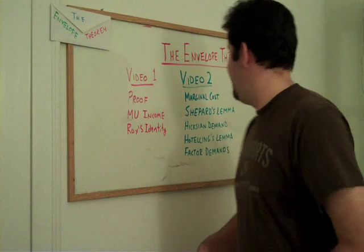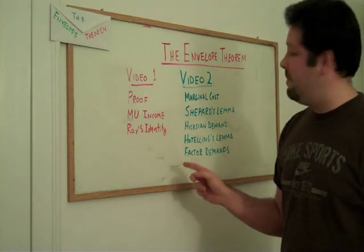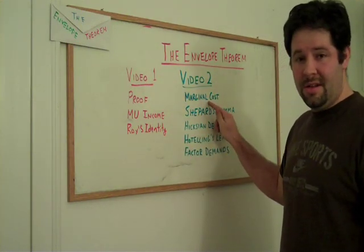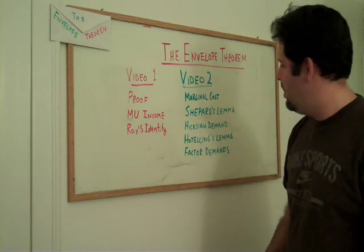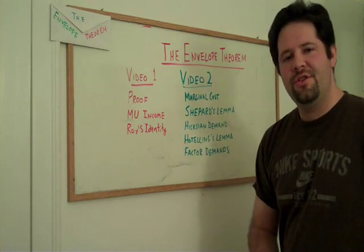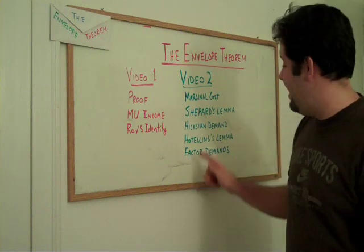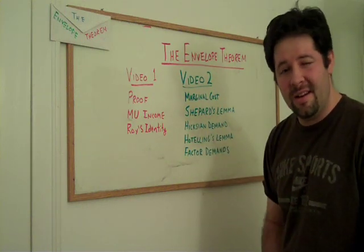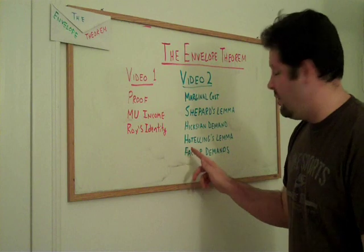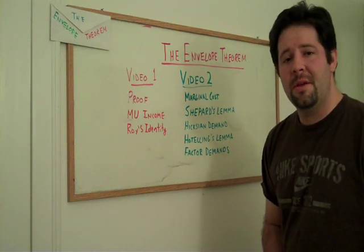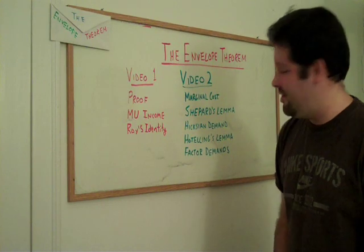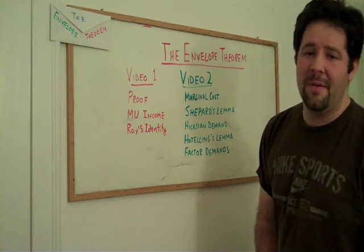In particular, in this video, I'm going to use the envelope theorem to say something about marginal cost. I'm going to derive the well-known Shepard's Lemma. I will show the relationship between the envelope theorem and how to get Hicksian demand in an unconventional way. I will derive Hotelling's Lemma, and I will show you something about direct profit maximization and how to obtain factor demands.